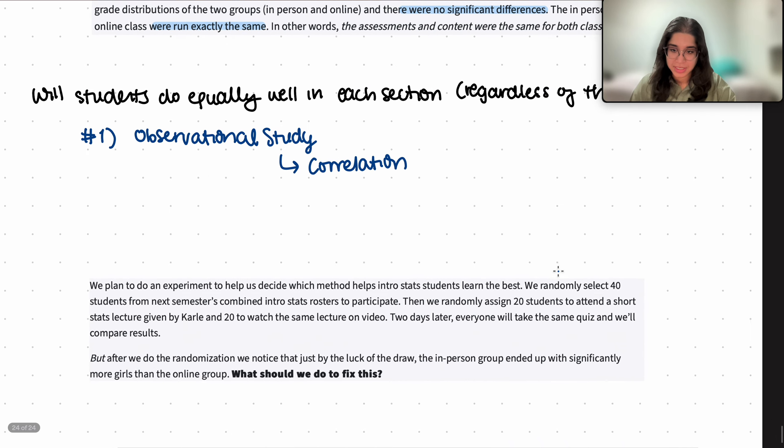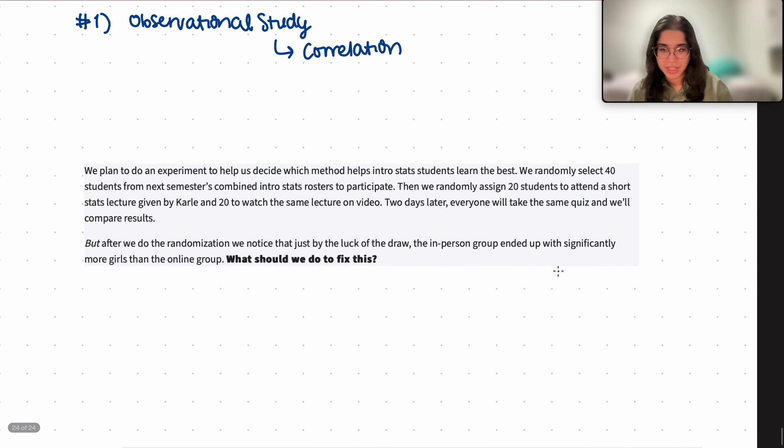The second part of the question is: we plan to do an experiment to help us decide which method helps intro stats students the best. We randomly select 40 students from next semester's combined intro stats rosters to participate. Then we randomly assign 20 students to attend short stats lectures and 20 to watch the same one on video. Later everyone takes the same quiz and we compare results.